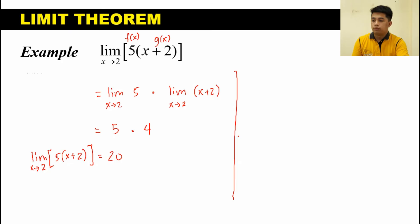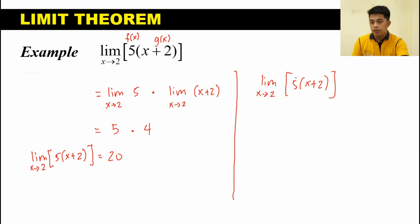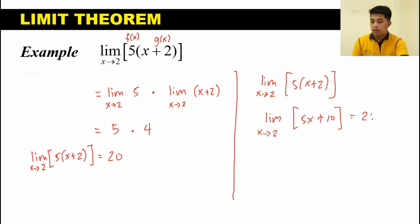What if we use distribution before evaluating the limit? In the same example, the limit of 5 times the quantity X plus 2 as X approaches 2 — if we distribute 5 first, this becomes the limit of 5x plus 10 as X approaches 2. Solving: 5 times 2 plus 10 equals 10 plus 10 equals 20. Therefore, the limit is 20, which is the same answer. Whatever process you follow, as long as your process is correct, you will get the same answer.